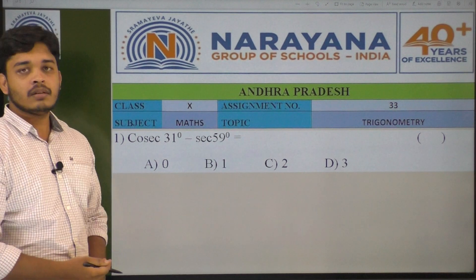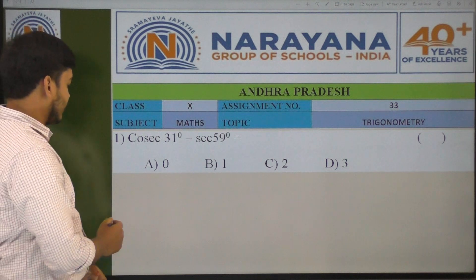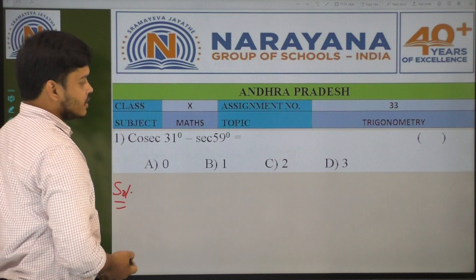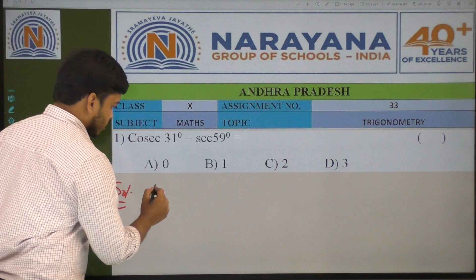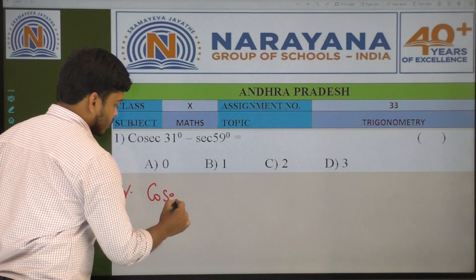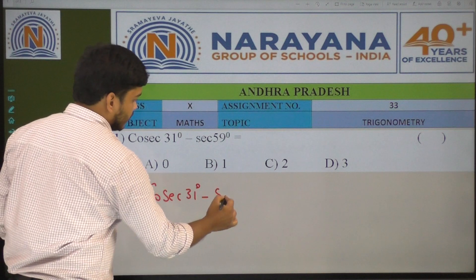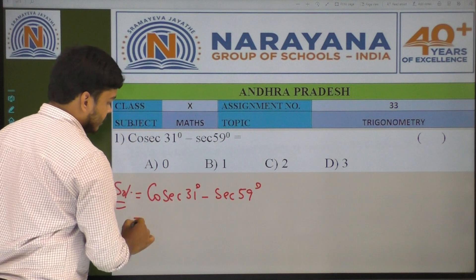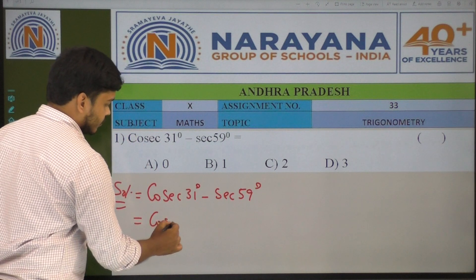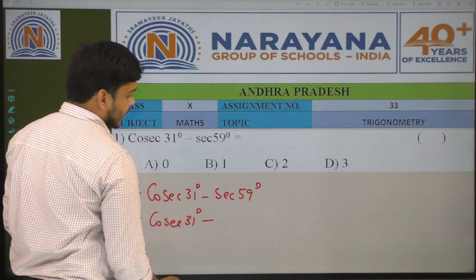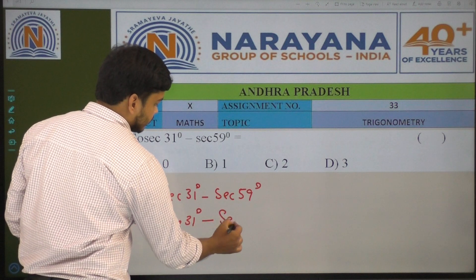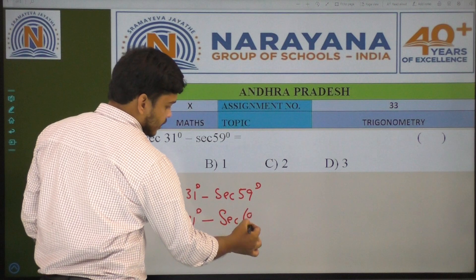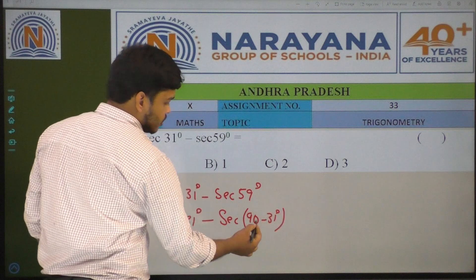What is the value of cosecant 31 degrees minus secant 59 degrees? Let it be cosecant 31 degrees minus secant 59 degrees. We can write 59 degrees as 90 minus 31 degrees.